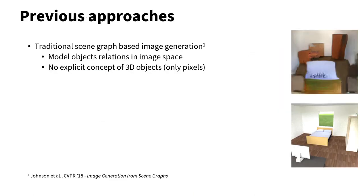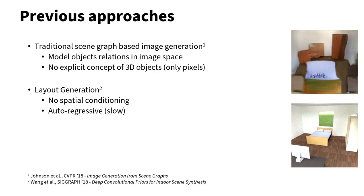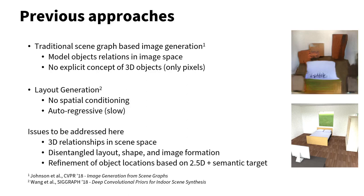As a quick recap of prior work, there is work on scene graph-conditioned image generation, but these operate in pixel space and are not 3D aware. There is work on layout generation, but generally these do not allow for fine-grained control over object positions and can be very slow. Our work aims to be fast while satisfying the scene graph constraints and allows for the refinement of object locations based on 2.5D and semantic targets.